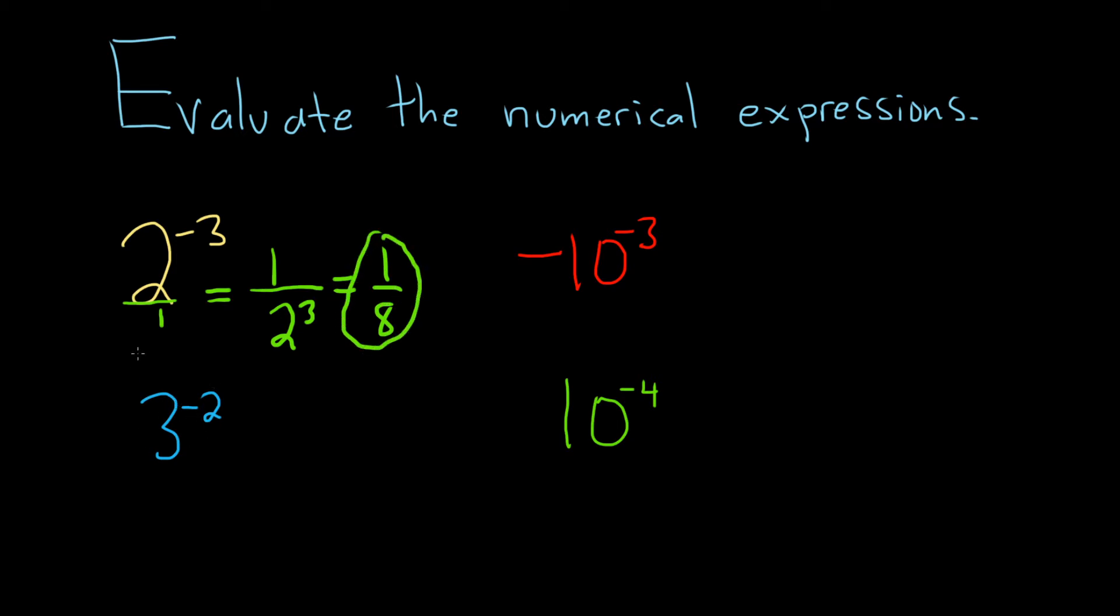Same thing here on this one, we have 3 to the negative 2, so the idea is to make the exponent positive. Again, you can think of this as a number over 1. So what we can do is bring it downstairs and it becomes 1 over 3 squared and it becomes positive. And so now you get 1 over 9 and that would be the answer.